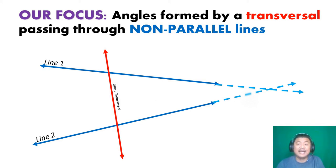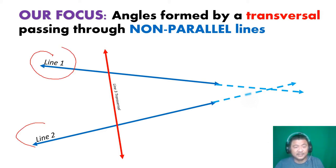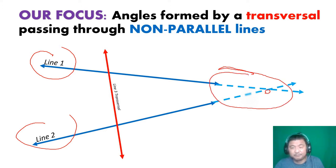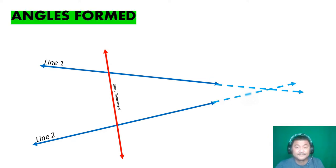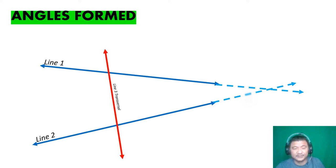Our focus here are the angles formed by a transversal passing through non-parallel lines. This will be our model all the time — this is line one, this is line two, and those are the lines which are not parallel. If you extend the lines they will meet at a certain point, so definitely they're not parallel. And the red line is always our transversal.